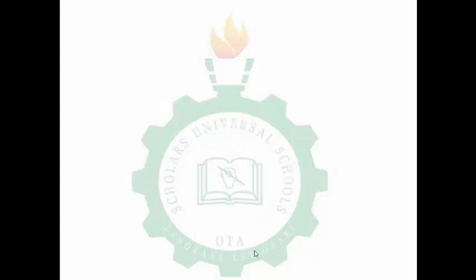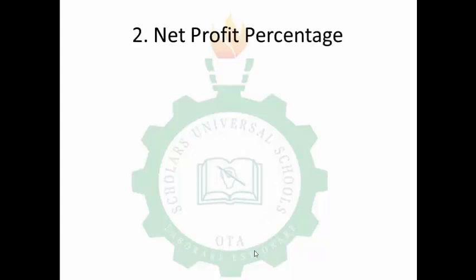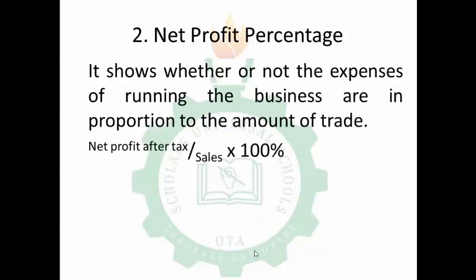Moving to the next part: net profit percentage. Net profit is gross profit minus expenses. Net profit percentage shows whether or not the expenses of running the business are in proportion to the amount of trade. Some companies making a loss may actually be performing well, and not all profitable companies are efficient. The formula is: net profit after tax divided by sales, times 100%.